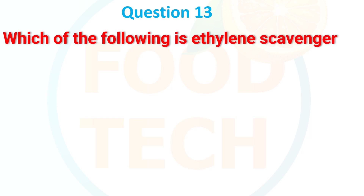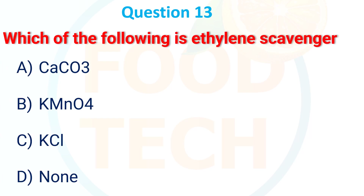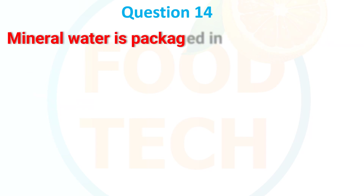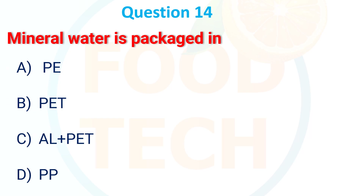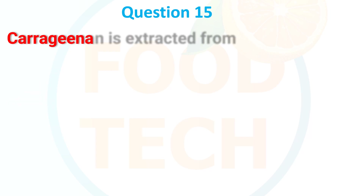Which of the following is an ethylene scavenger? a) CaCO₃, b) KMnO₄, c) KCl, d) none. The answer is b) KMnO₄. Mineral water is packaged in: a) PB, b) PET, c) Al plus PET, d) PP. The answer is PET.